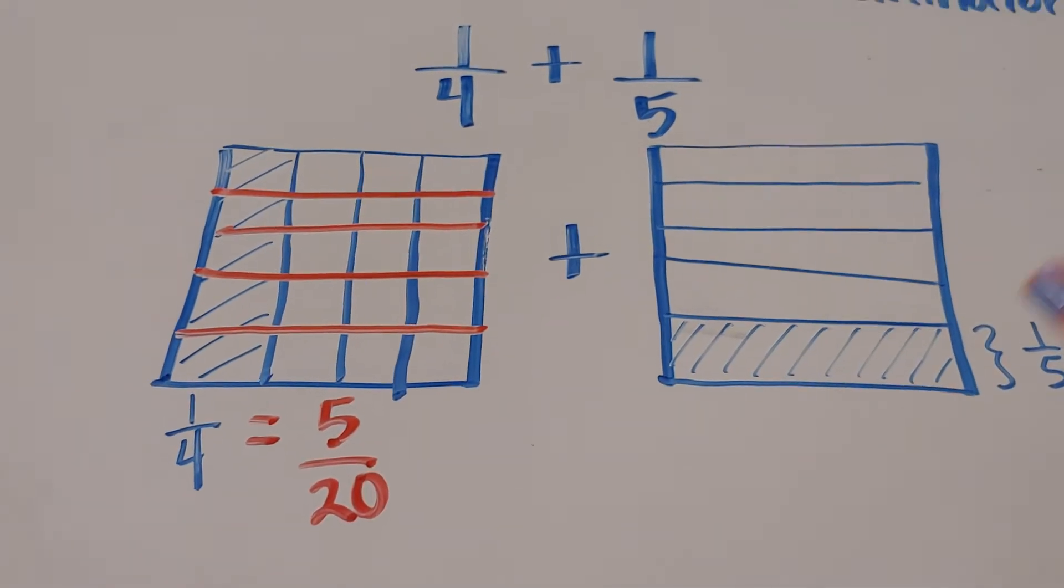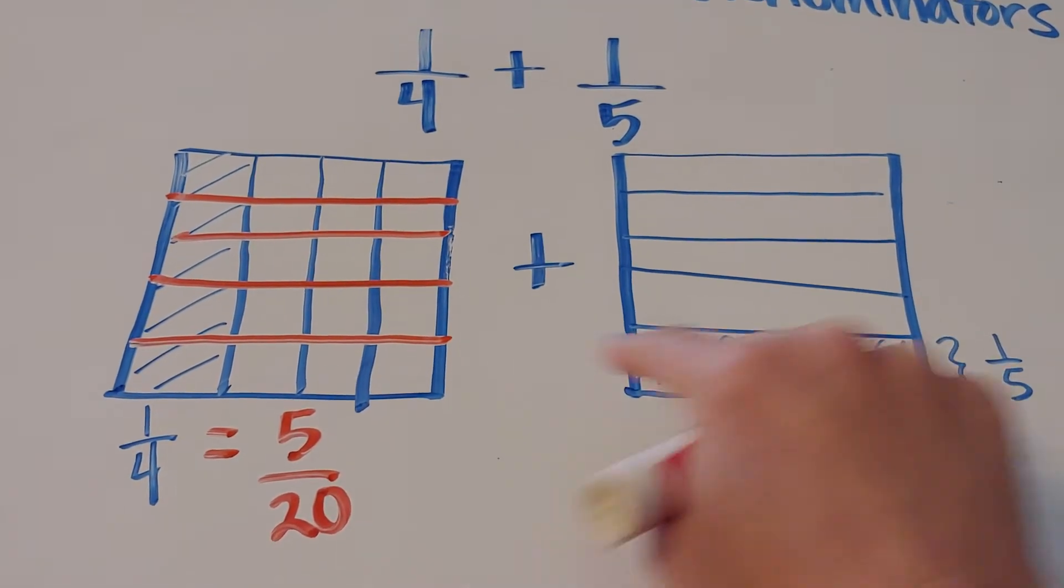Pretty clever, right? All right, we're going to do the same thing over here to make this match this. We're going to put four vertical stripes.